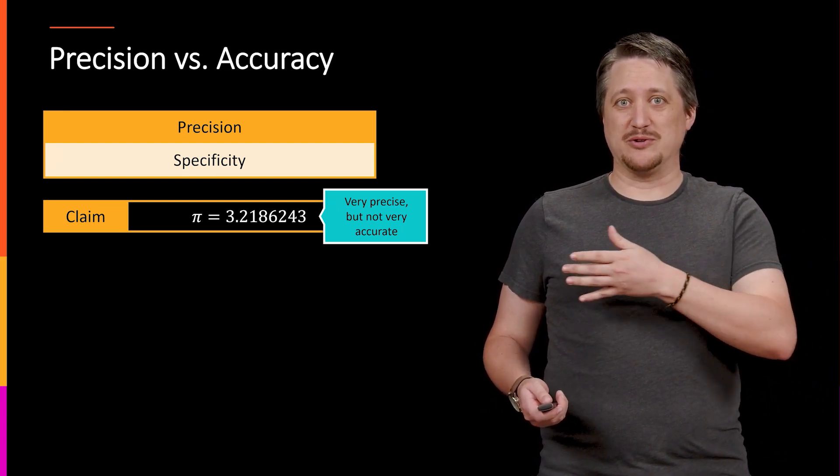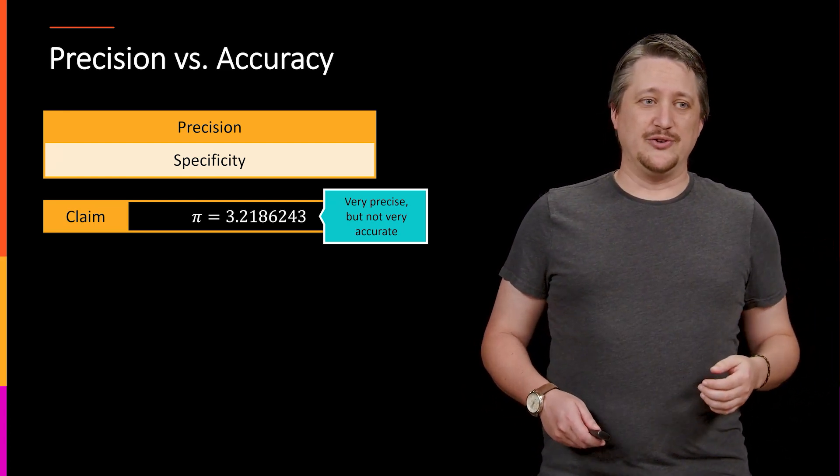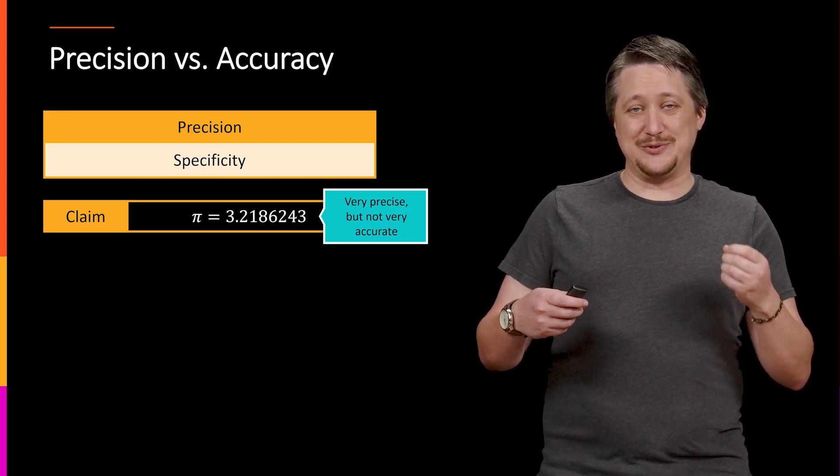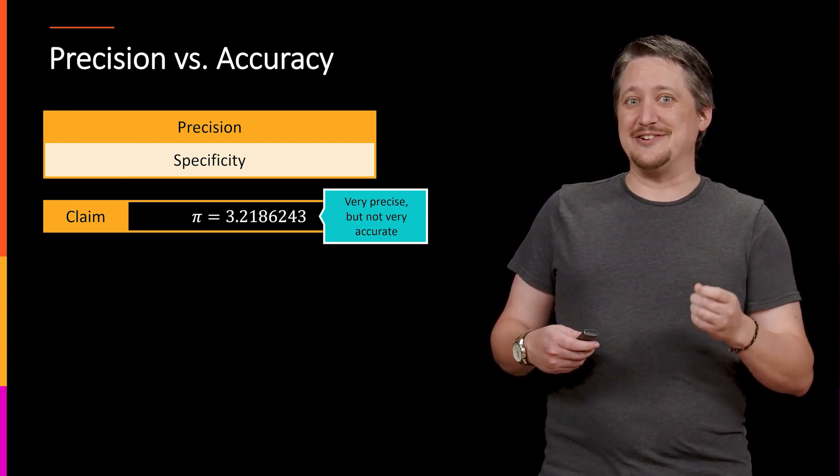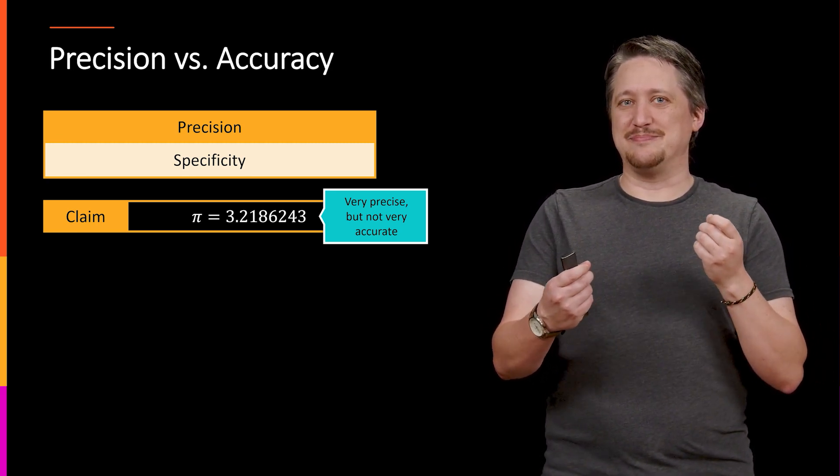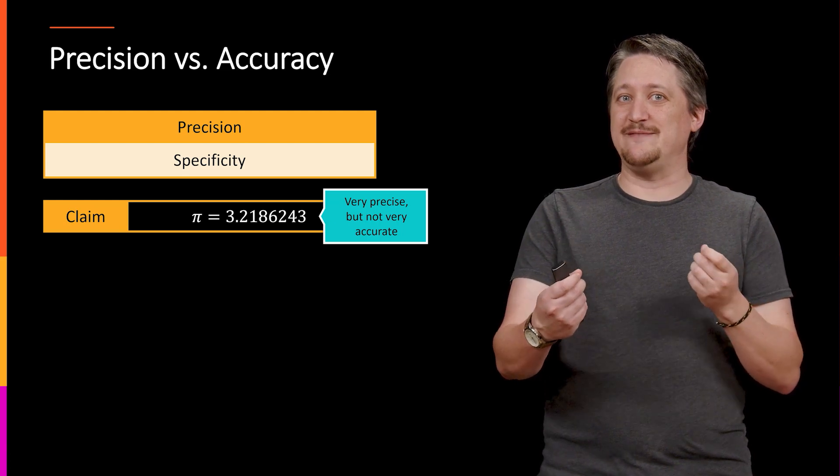Pi is 3.1415, blah, blah, blah. So the difference here is that you can give a lot of digits of accuracy that aren't accurate. So we want to use the term precise instead to not confuse those.